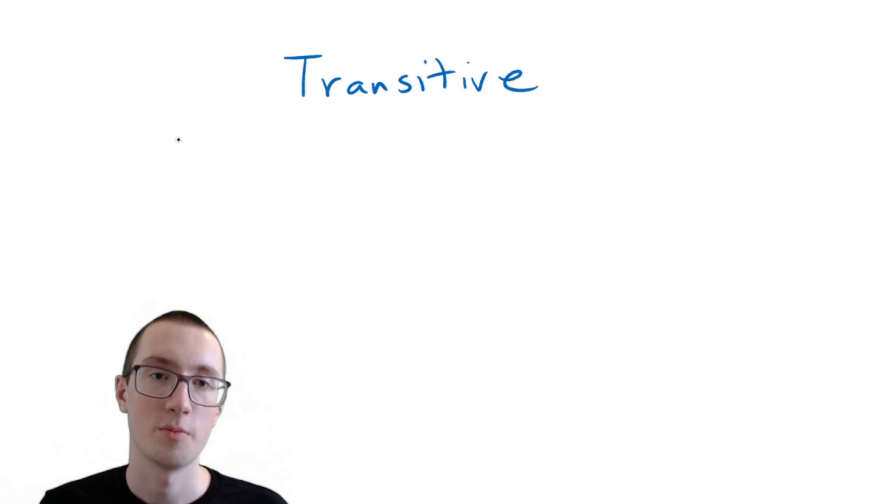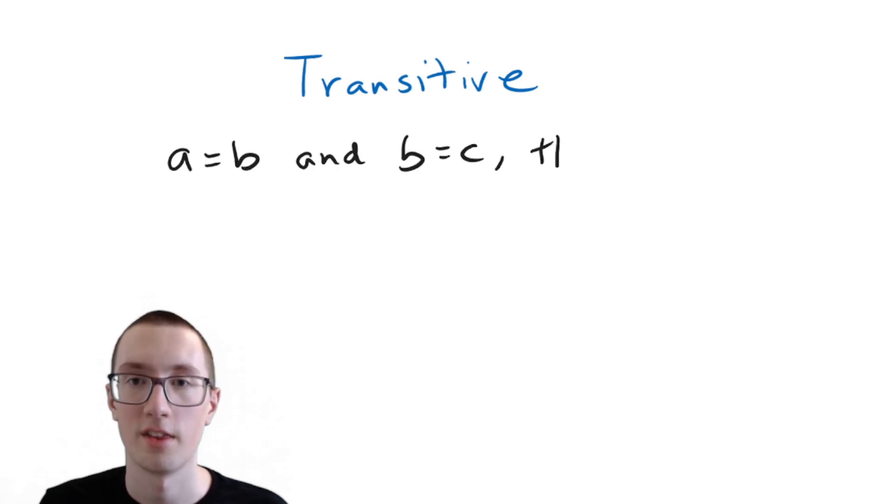So now we get into the less obvious ones, which are transitive and substitution. So transitive basically says that if A equals B, and B equals C,